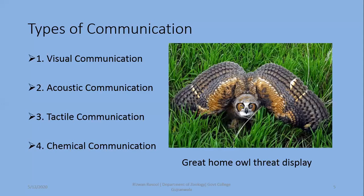There are four types of communication that we are going to discuss here. As you can see, there is a threat display of a great horned owl, giving its threat display which shows visual signaling — visual communication. There are four ways by which animals communicate with each other: first through vision, second through sound, third tactile communication, and the last is chemical communication.